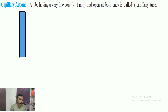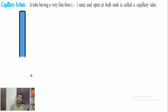You can see a tube on the screen. The two ends are open, and the tube is where the bore is reduced — the radius is reduced. The bore is approximately 1 mm diameter. So, a capillary tube has a reduced bore of approximately 1 mm diameter.